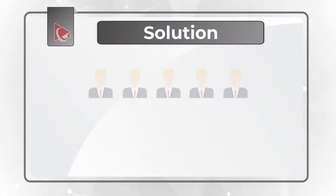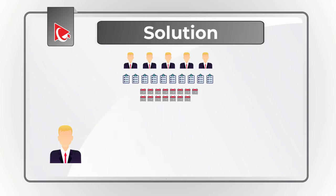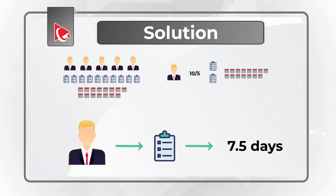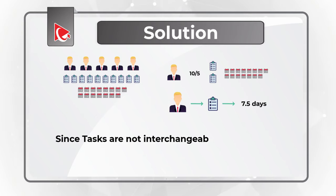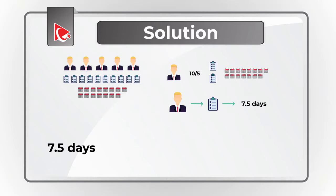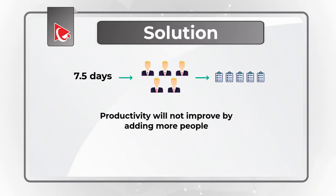Here is the trick. If 5 people can complete 10 tasks in 15 days, one person can complete 10 divided by 5, which is 2 tasks in 15 days. Since tasks are the same length, one person can complete 1 task in 7.5 days, calculated as 15 divided by 2, which equals 7.5 days per task. Since tasks are not interchangeable, only 5 people out of 15 will be able to contribute to the completion of 5 tasks, and it will take 7.5 days. Productivity will not improve by adding more people.